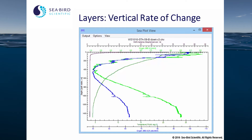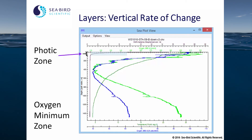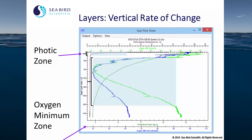Here are some examples of layers that denote a vertical rate of change. The photic zone, here designated using a PAR sensor or photosynthetically available radiation, is in the very upper water column. The oxygen minimum zone is a much larger zone in which the oxygen goes down relative to the near surface — generally a supersaturated area — and a deep layer in which it's more close to saturation.